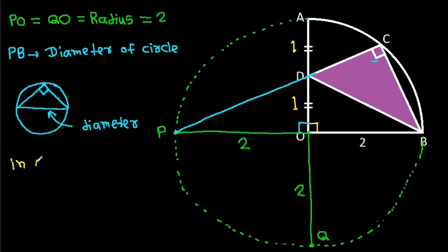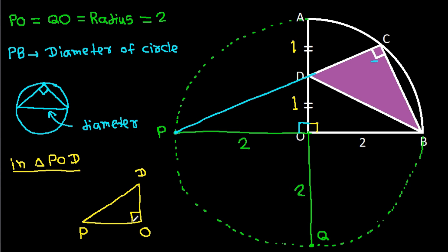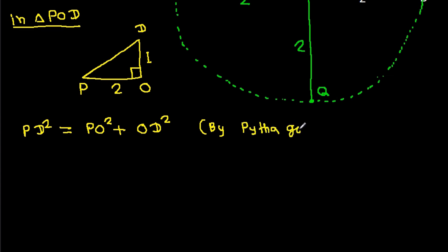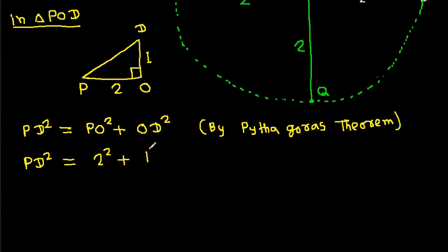So the angle POD is 90 degrees. PO is 2 and OD is 1. So PD squared equals PO squared plus OD squared by the Pythagorean theorem. PD squared equals 2 squared plus 1 squared, which is 4 plus 1, so PD squared equals 5.